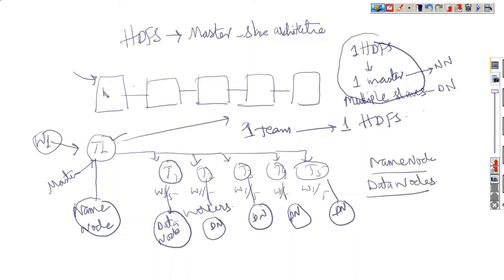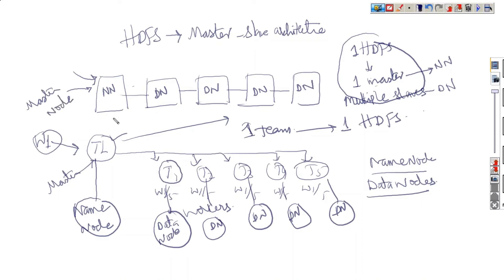I install name node here, and I install data nodes on all the machines. Now this node will be called as master node, because the master process is running in that node. And these nodes are called as slave nodes because slave processes are running in these nodes.